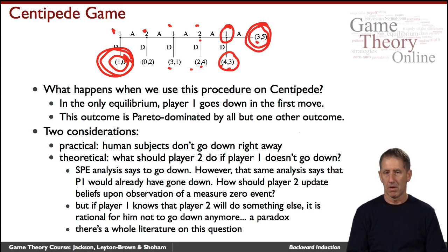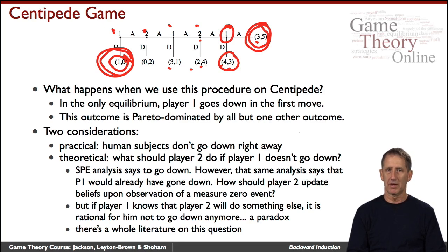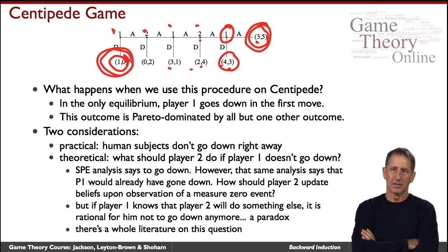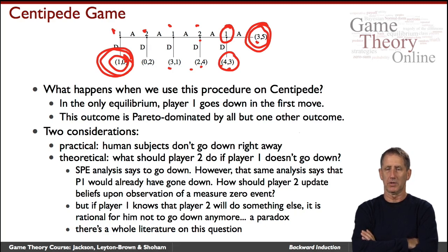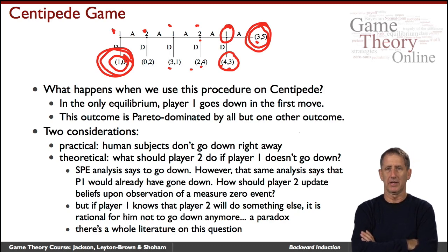There are two problems with this result. One is experimental and common sense: this is simply not what's going to happen in practice. Players will cooperate for a while until at some point somebody goes down and ends the game — they know there's so much to gain by going forward. This intuition is borne out repeatedly in experiments: people do cooperate for a while until eventually they defect.